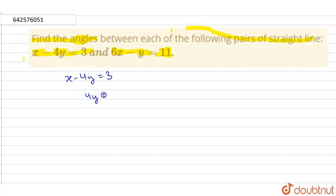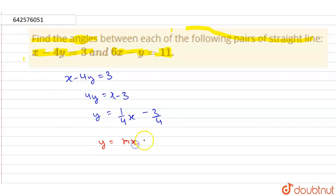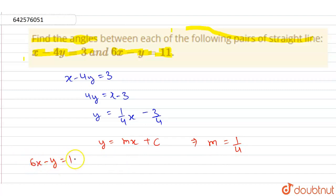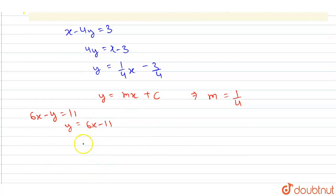Now from here, we have 4y is equal to x minus 3, and y is equal to 1 by 4 of x minus 3 by 4. On comparing with the general equation, we have our general equation as y is equal to mx plus c. Now from here, we get the value of slope m1 is equal to 1 by 4. And the another equation is 6x minus y is equal to 11. So after this, we will get y is equal to 6x minus 11. Also comparing it with the general equation, we get slope m2 is equal to 6.